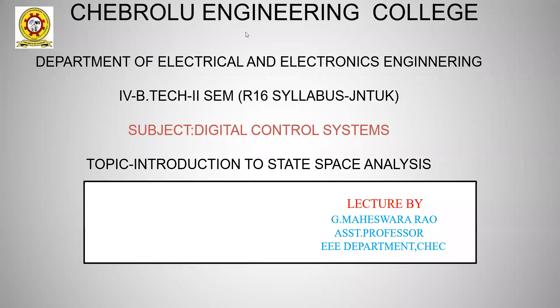Good morning to one and all. Today we are discussing the topic: Introduction to State Space Analysis, third unit. This unit covers constructing the state space representation, calculating the state transition matrix, and controllability and observability. We will look at what is meant by state space, construction of the state model, state transition matrix problems using various methods, and controllability and observability.